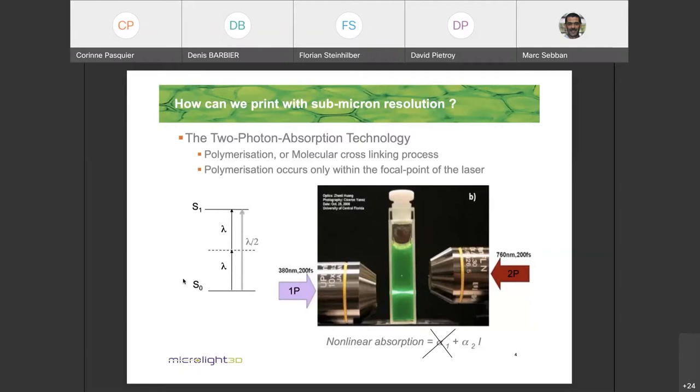If you look to this picture, you see on the bottom a standard one photon absorption. So you have from the left, a laser beam which is focused inside of a polymer. The polymer is the vial in the middle with the green polymer inside. And you see that with one photon absorption, you will absorb all along the thickness of the polymer. So you will basically create an object which is as long as the thickness of the polymer.